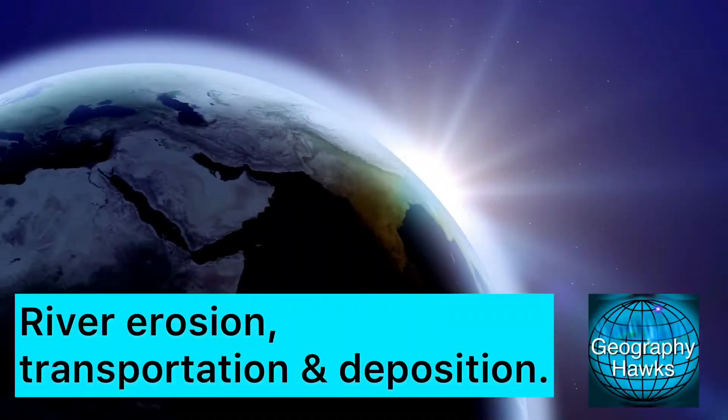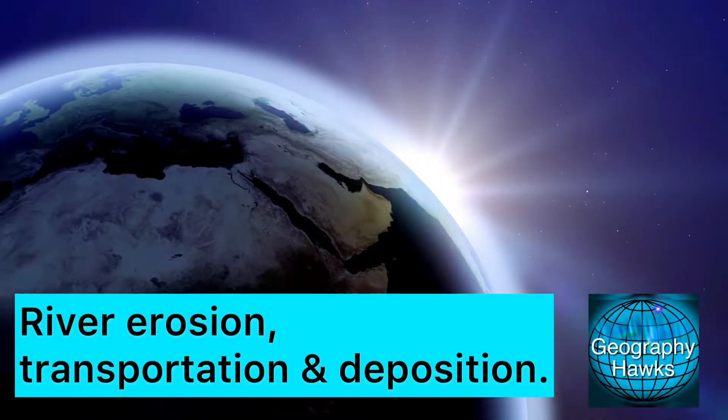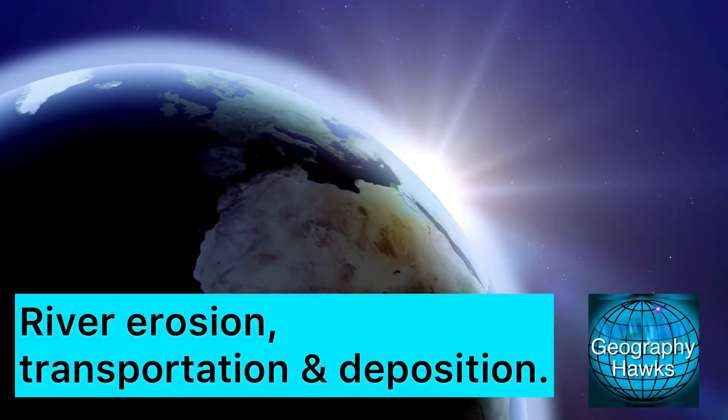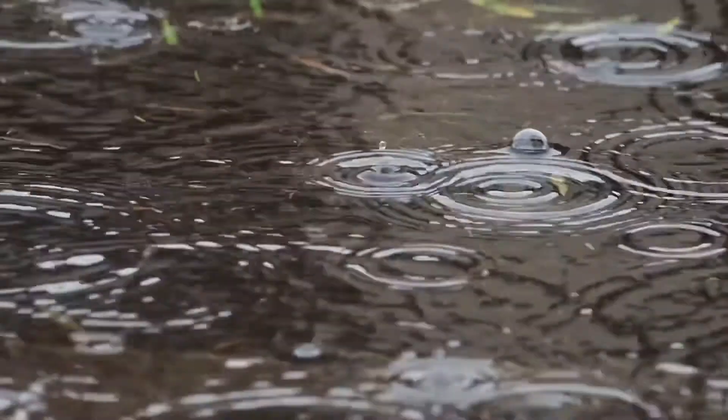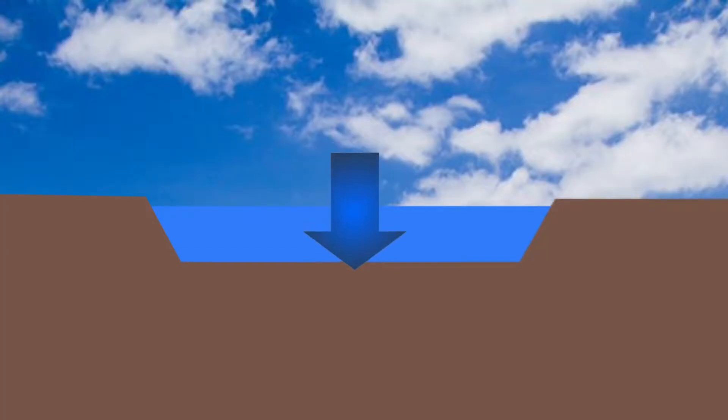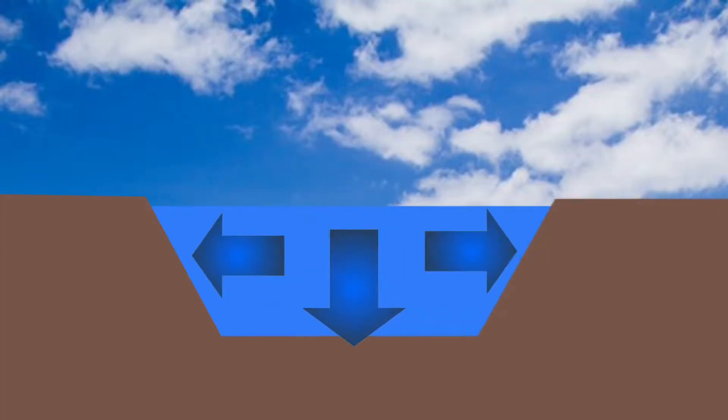Erosion, transportation and deposition all work along the course of a river. Let's find out how and where these processes take place. After rainfall, a river can develop more energy to erode its channel. It will do this through vertical erosion or lateral erosion.